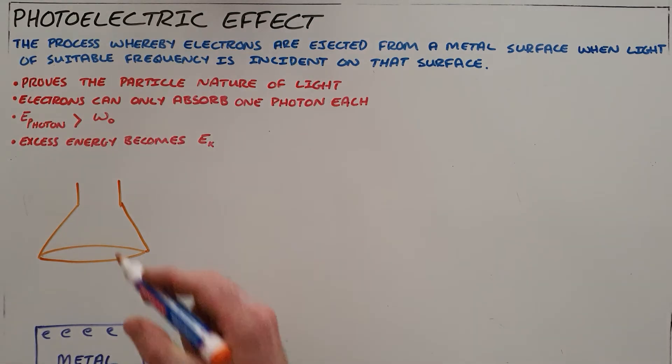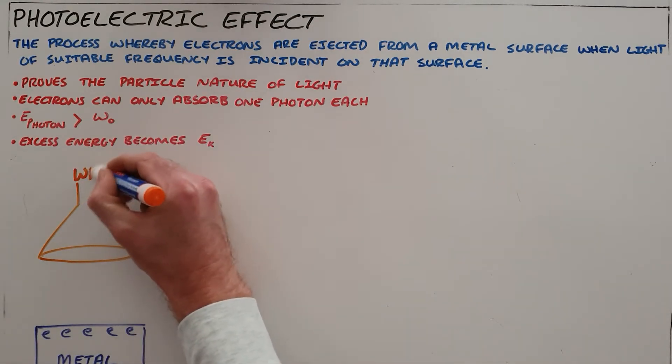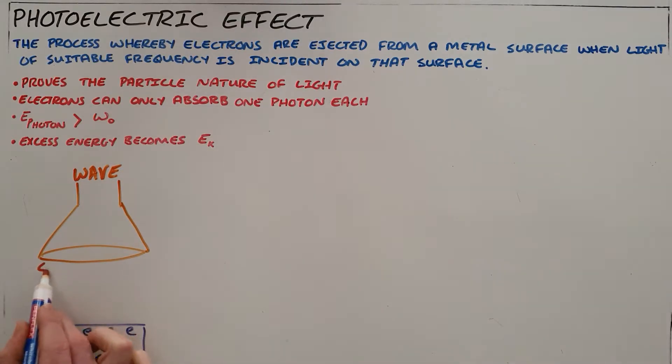So until this point we have viewed light as a wave, a wave in the sense that it is able to interfere with itself. We have done a number of experiments in optics in which we showed how light creates an interference pattern.